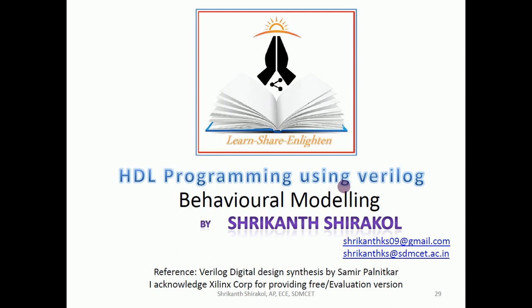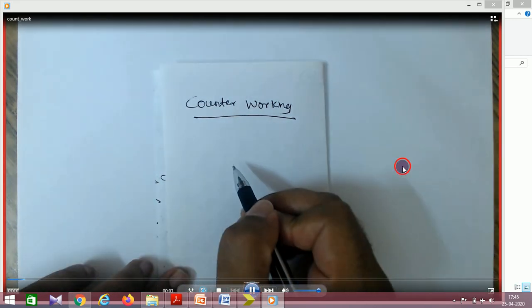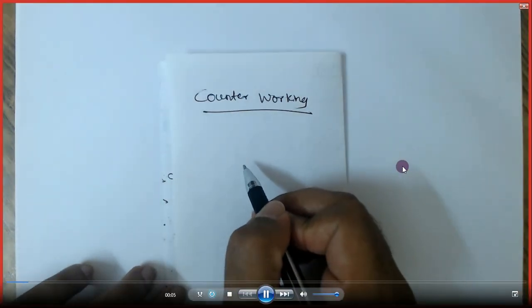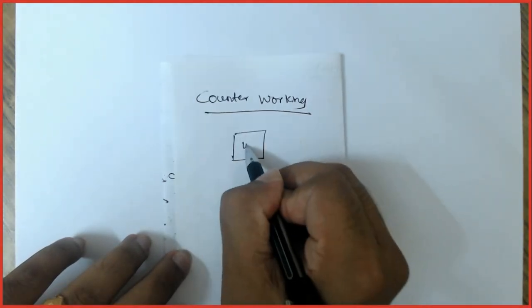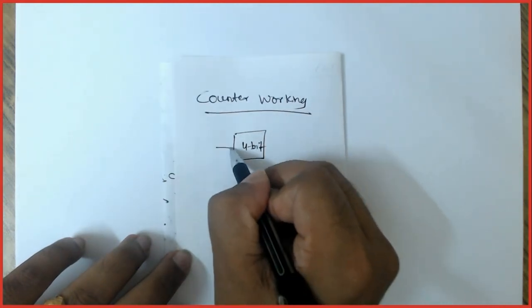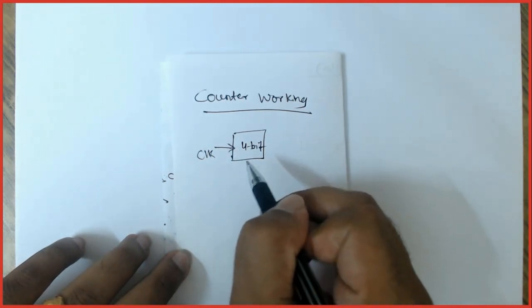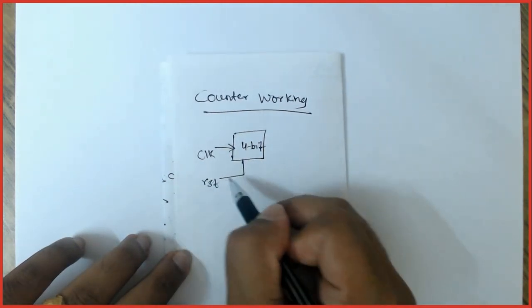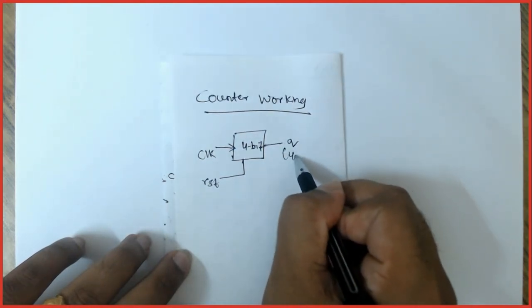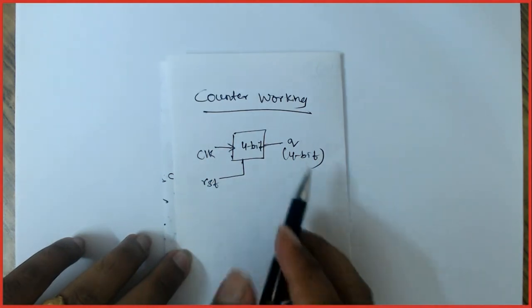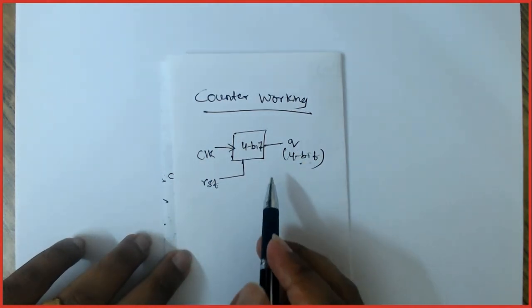Before we proceed with writing the code, let us understand how the counter works. Let us assume we have a 4-bit counter. It will be triggered by a clock which is edge triggered. Reset is optional—you can have reset or you may ignore it. You will be having the output, and your output will be of 4 bits. This defines a 4-bit counter.